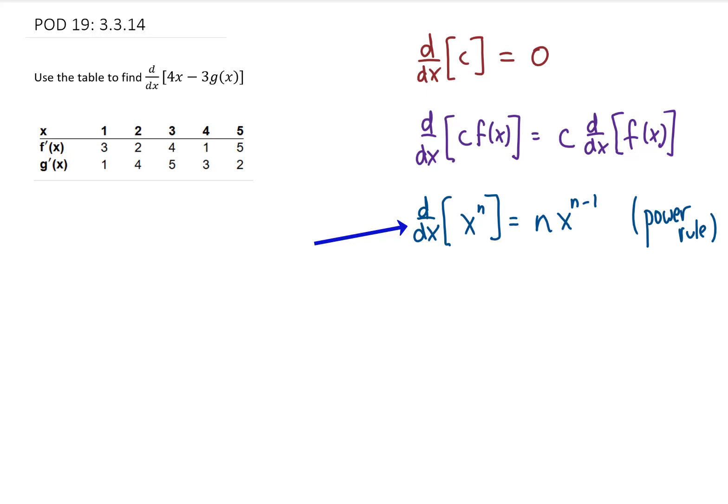That's a really good one. And then the last one we're going to use in this particular problem says that if you have two functions added or subtracted, and you want to take the derivative of the sum of those two functions, you can take the derivative of those two functions separately and then add those two results together.